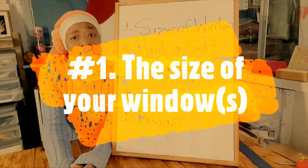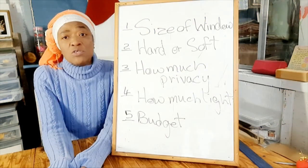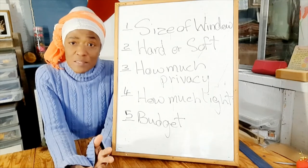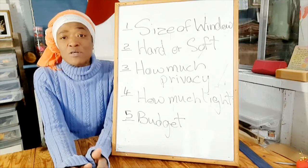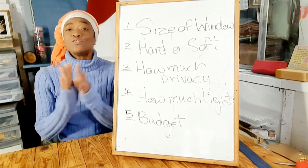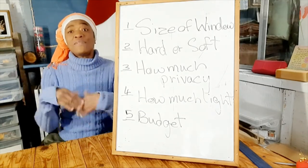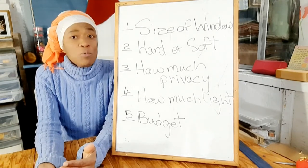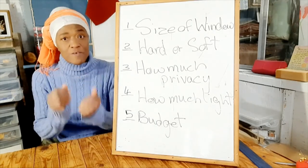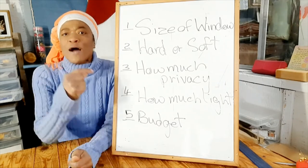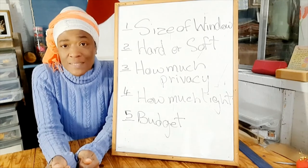The first one is the size of your window. Depending on the size of your window, your window treatment can be expensive or it can be less expensive. For example, if you have a huge window and you're choosing elaborate swags and jabots and panels and you have layered window treatments, that will be mighty expensive. If you have a smaller window and you want to do that layered effect, it will be less expensive. So you have to consider the size of your window when making your window treatment decision.